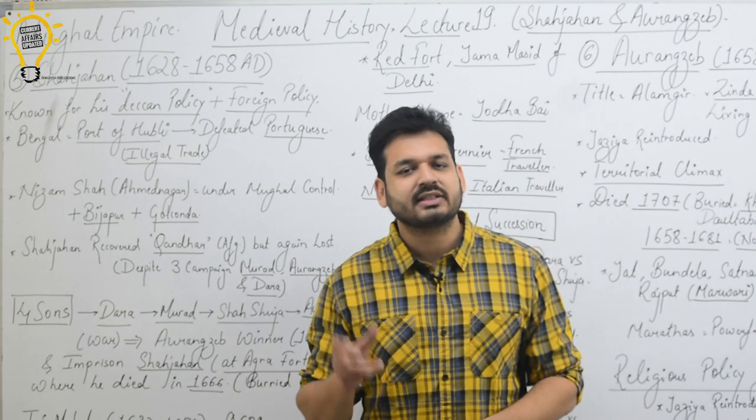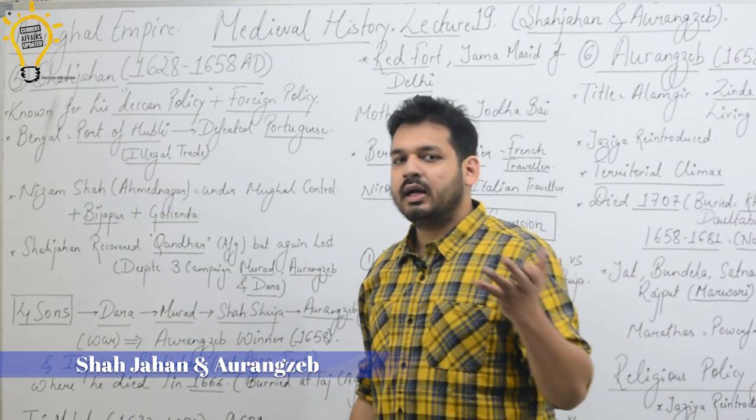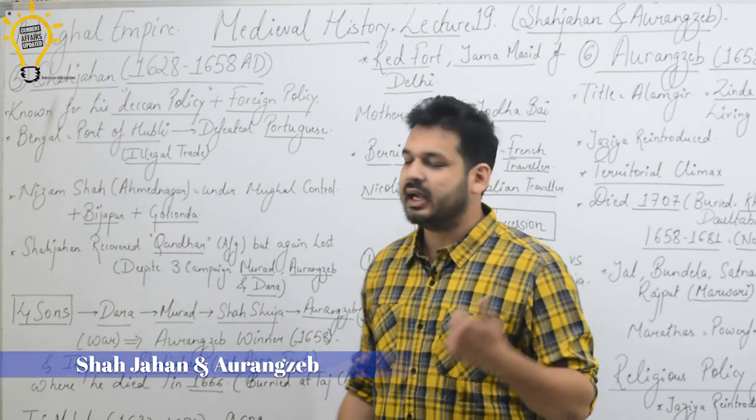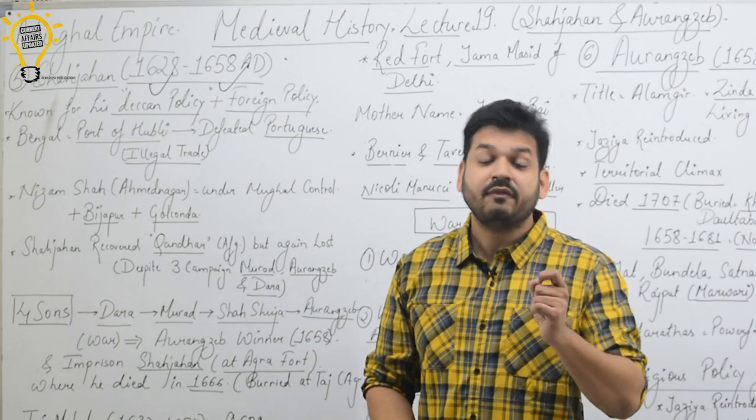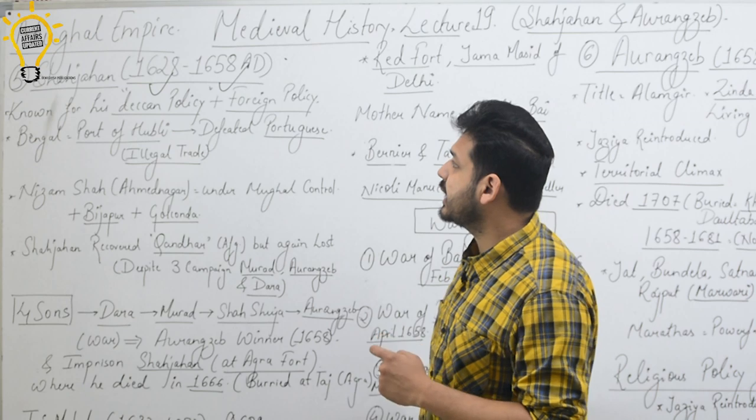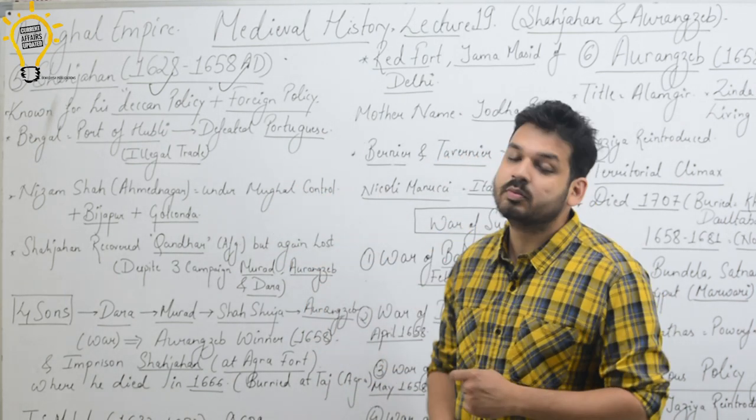First, after the death of Jahangir, Shah Jahan ruled from 1628 to 1658 AD. You have to remember around 30 years has been ruled by Shah Jahan.